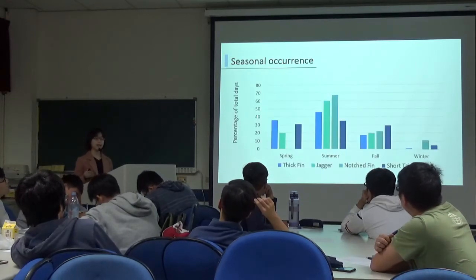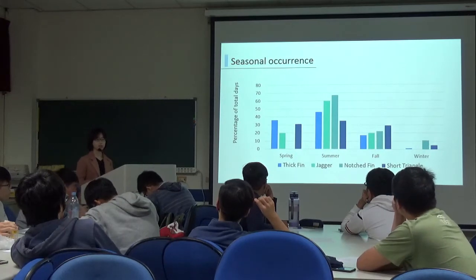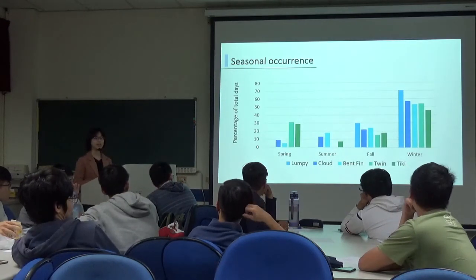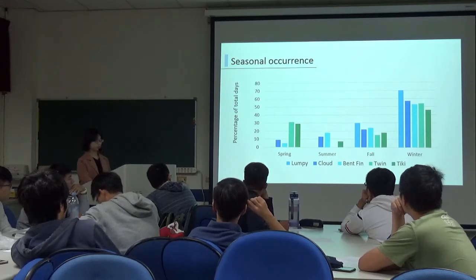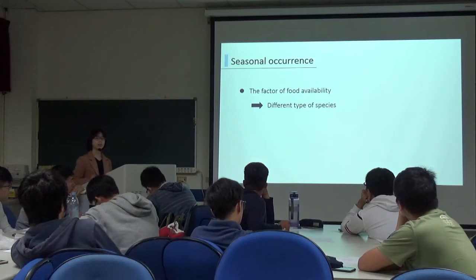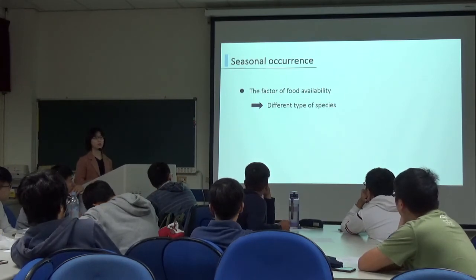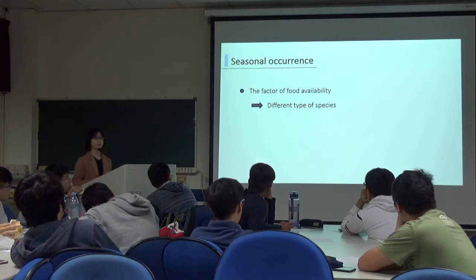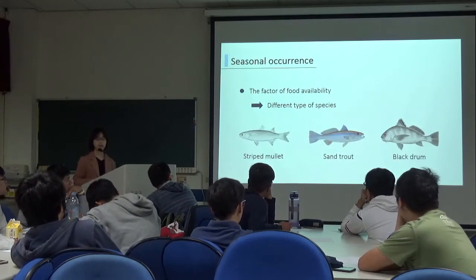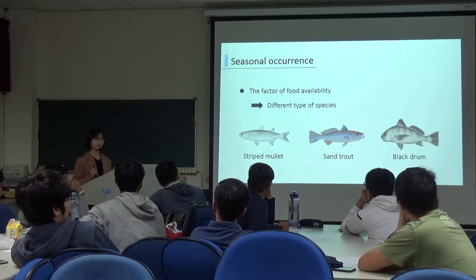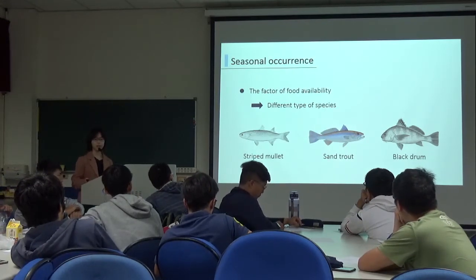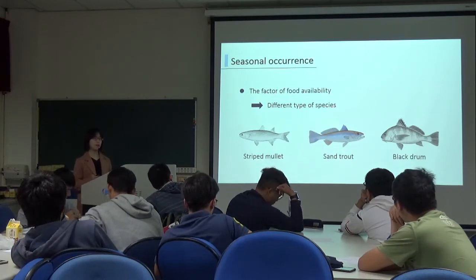The other three individuals, including Jagger, Notch Fin, and Short Triangle, show the same results. While all five other individuals, including Lunky, Crows, Ban Fin, Twins, and Tiki, tend to appear during fall and winter. About this phenomenon, the explanation is food availability. According to Gunther's research, most fish species emigrate from the bay to the gulf for the winter, but a few species spend the winter in the bay. For example, three species including striped mullet, stratum, and drum, which spend the winter in the bay, have been found in the stomachs of bottlenose dolphins. So if food availability influences seasonal occurrence phenomena in the study area, the individual dolphins or social groups may have their own food preferences.